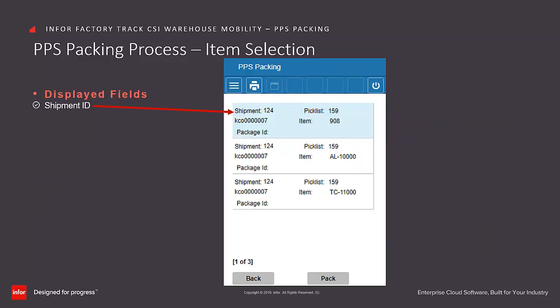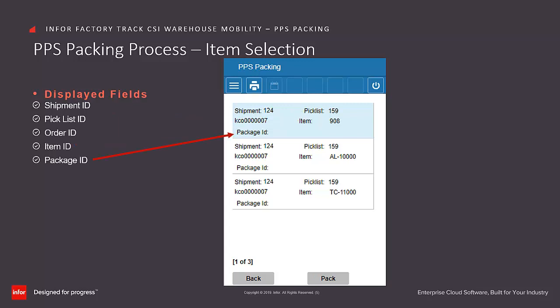Once the picklist is selected based on the previous filter selections, FactoryTrack displays the Item Detail selection, which requires the Pack process to fill the order. Each item detail includes the following information associated with previously picked items: the Shipment ID, the Pick List, the Order Number, the Item ID, and the Package ID for any items or packages that have already begun the packing process. You select the item or package to continue, then click on Pack.